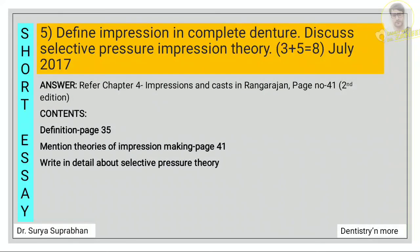Next: define impression in complete denture and discuss the selective pressure impression theory. Refer chapter 4, page number 41. First define what is an impression (page number 35), then mention the three theories of impression making: mucostatic or minimal pressure theory, mucocompressive or pressure impression technique, and the selective pressure impression theory. Then write the details about the selective pressure theory.